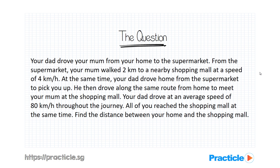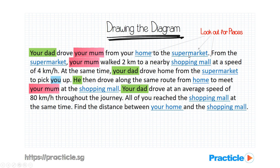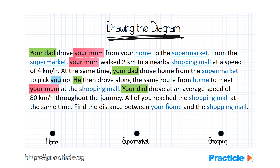So can you tell how many people are involved in this question? There's your dad, your mom, and you — three of you in all. Because the people are moving, they'll definitely be traveling from one point to another. So the next thing we need to take note of would be the different places. We have your home, the supermarket, and the shopping mall. We'll use dots to represent each place and label them accordingly — here's our home, followed by the supermarket, and the shopping mall.